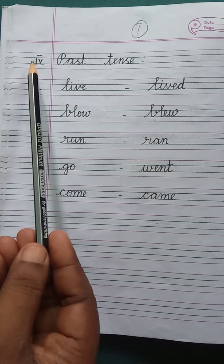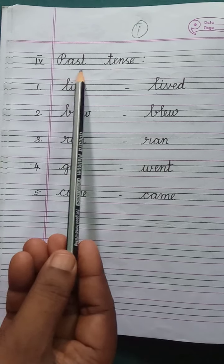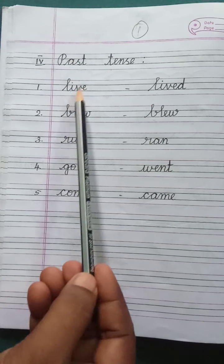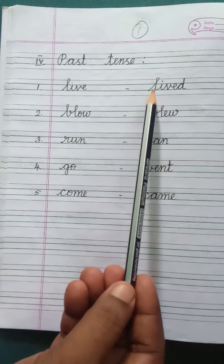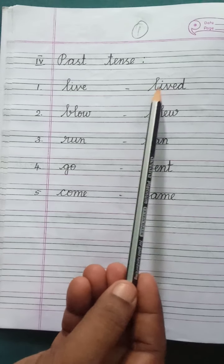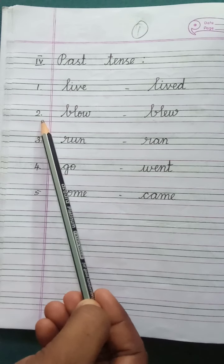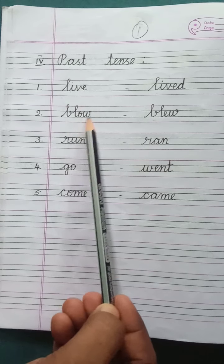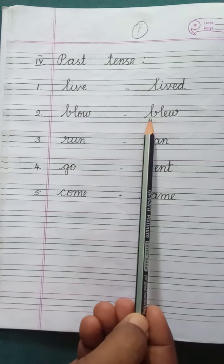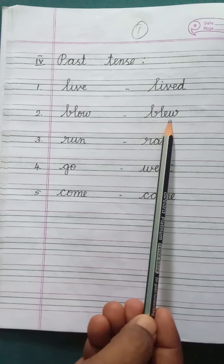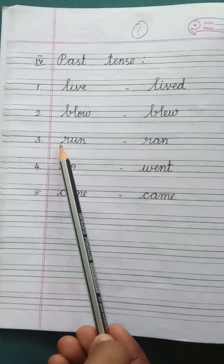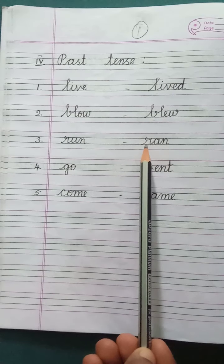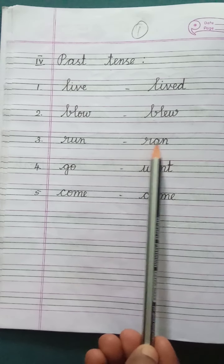Come to Roman Letter 4, Past tense. Number 1: Live — the past tense for live is Lived. L-I-V-E-D, Lived. Number 2: Blow — the past tense for blow is Blew. B-L-E-W, Blew. Number 3: Run — the past tense for run is Ran. R-A-N, Ran.